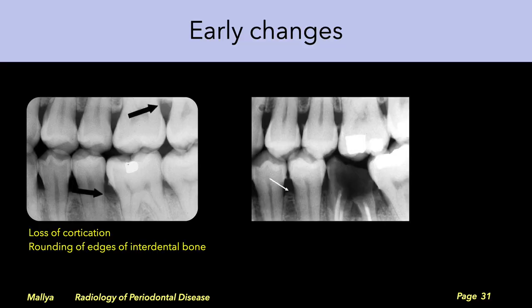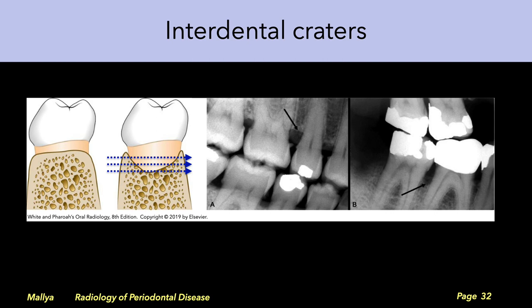The earliest changes of periodontal disease will start at the interdental bone. You will notice a loss of cortication of the interdental bone and the edges of the interdental bone start to get rounded off with widening of the periodontal ligament space. In the initial phases of bone loss, there is a crater-like defect in the interdental bone, leaving the facial and the lingual plates intact. These plates absorb adequate photons to appear radiopaque and mask the underlying crater defect.